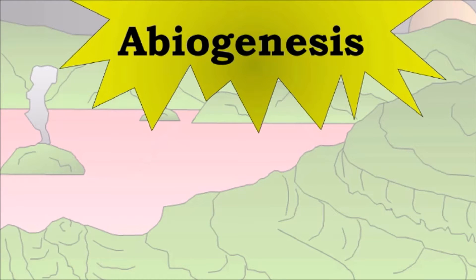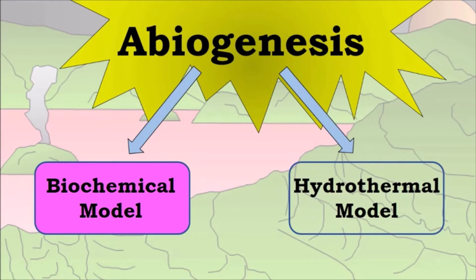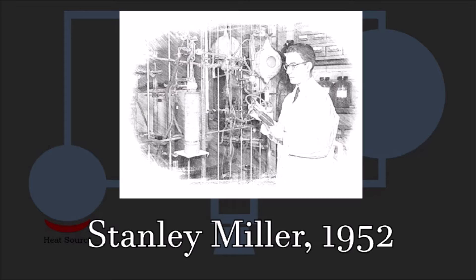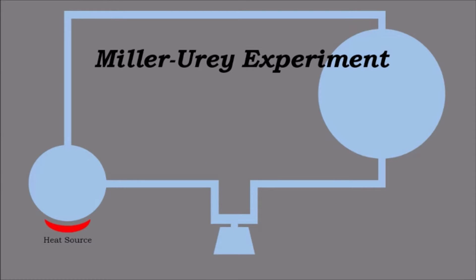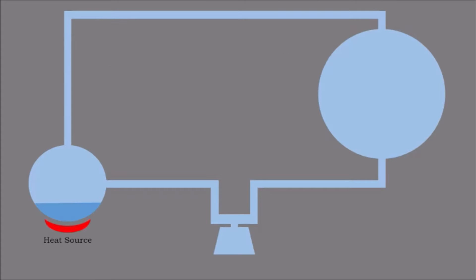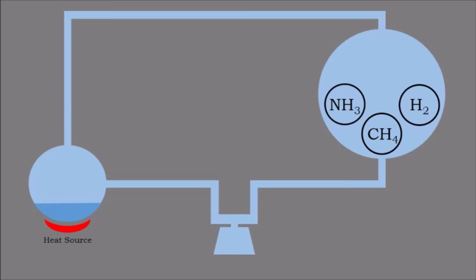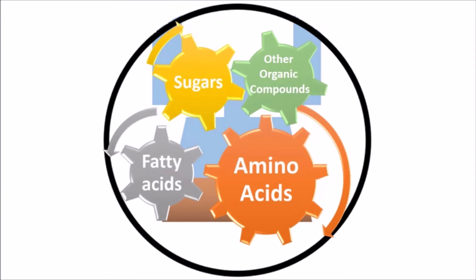Under the idea of abiogenesis, two popular branches are the biochemical model and the hydrothermal model. In 1952, Stanley Miller, a graduate student at the University of Chicago, carried out the now-famous Miller-Urey experiment, in which he operated a closed system apparatus with one flask containing heated water to represent a primeval ocean and another flask containing a mixture of methane, ammonia and hydrogen gases to represent Earth's early chemically reducing atmosphere. Both flasks were connected by rubber tubes while electrical sparks were added, acting as a stand-in for lightning. After a week, the water turned a pinkish-brown colour, which Miller revealed was a broth of amino acids, fatty acids, sugars and other organic compounds.